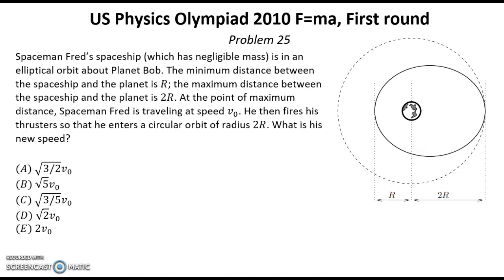Spaceman Fred's spaceship, which has negligible mass, is in an elliptical orbit about planet Bob. The minimum distance between the spaceship and the planet is R. The maximum distance between the spaceship and the planet is 2R.